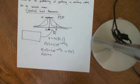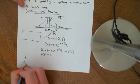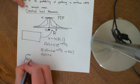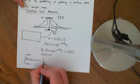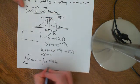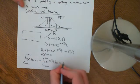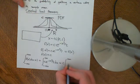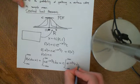Okay. So, if we want to make sure that it's a PDF, then we need to make sure that the integral between negative infinity and infinity of little f of x dx is equal to 1. So, that is the integral of c e to the negative x squared over 2 dx between negative infinity and infinity, which is equal to c times the integral from negative infinity to infinity of e to the negative x squared over 2 dx.